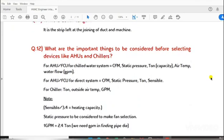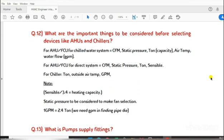Question 12: What are the important things to be considered before selecting devices like AHUs and chillers? For AHU/FCU for chilled water system: CFM, static pressure, ton capacity, air temperature, water flow GPM.